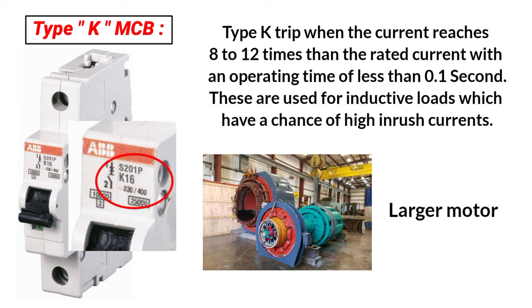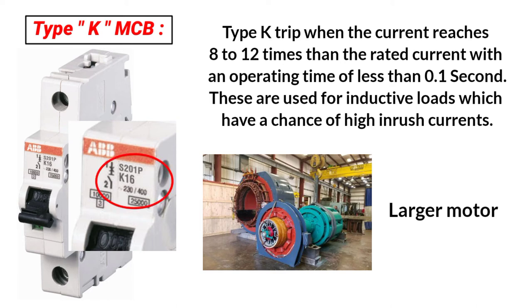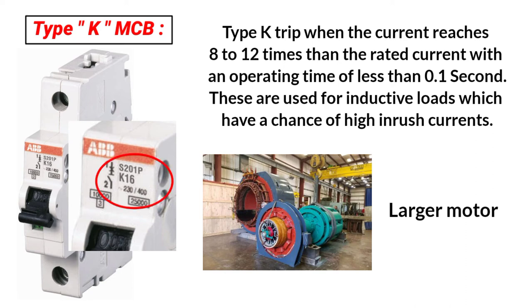Type K MCP is used for heavy inductive loads with high inrush current, for example DC motors or transformers. The normal tripping current is 8 to 12 times the rated current. The K-Type MCP will trip in 0.01 seconds.